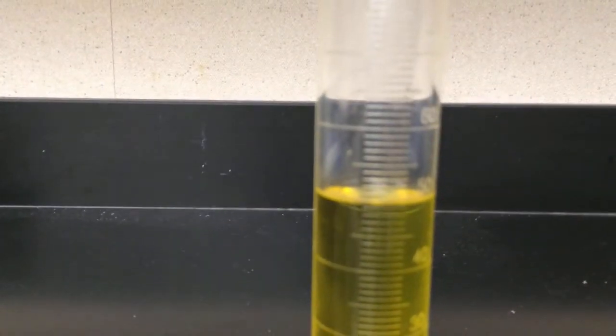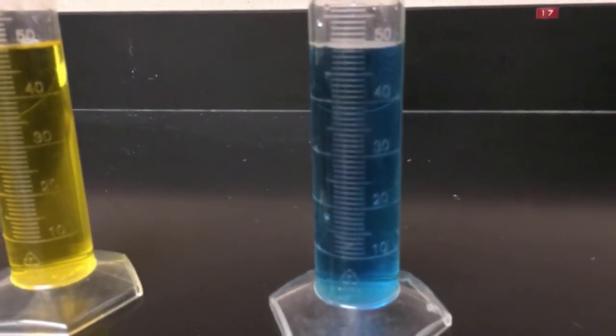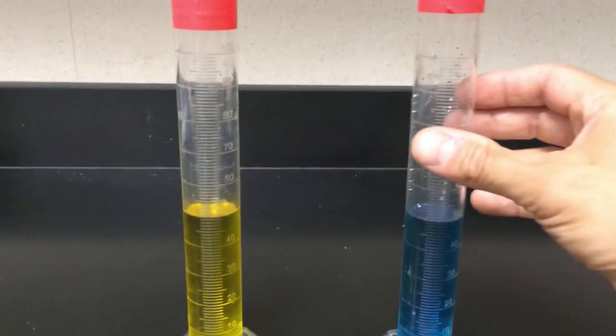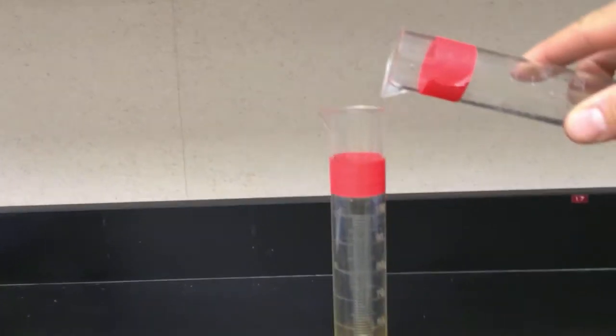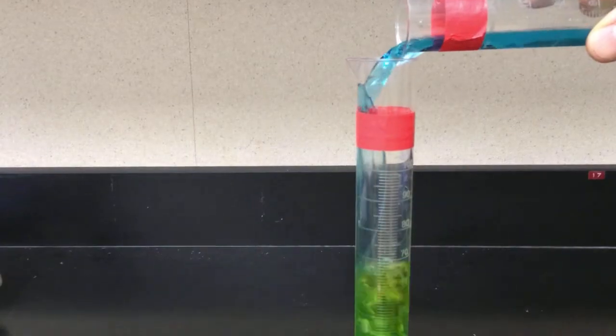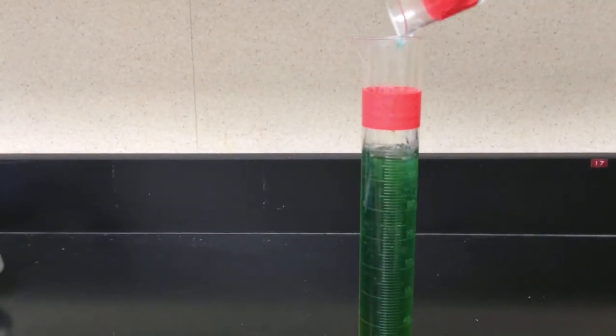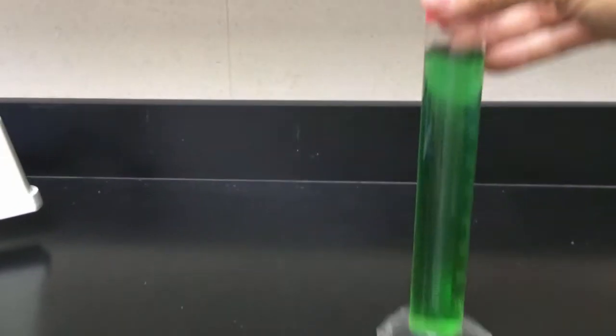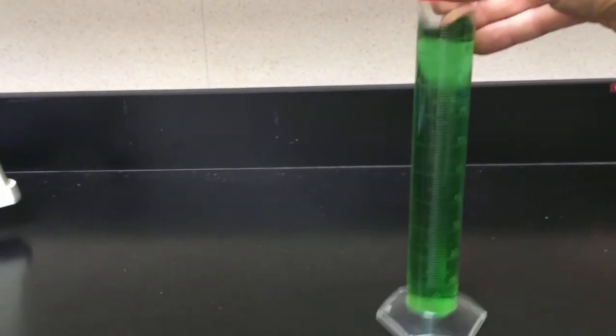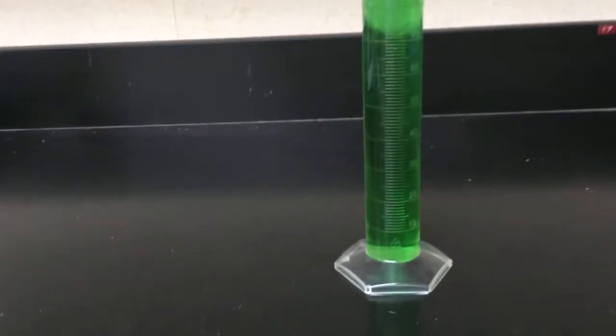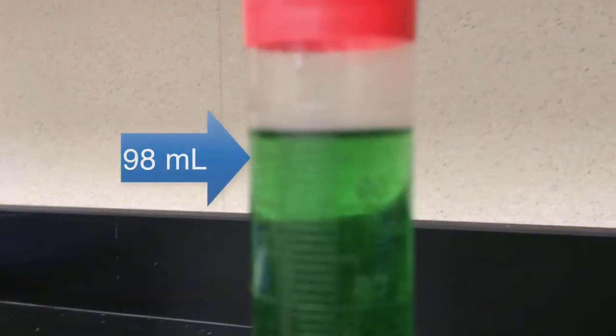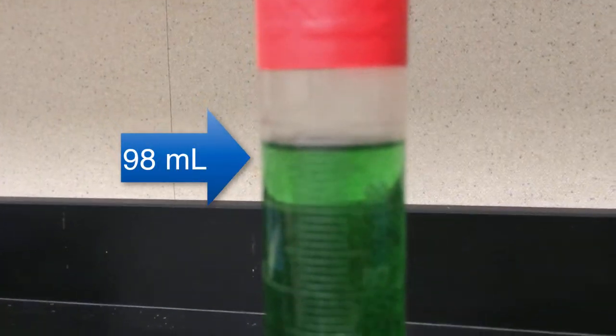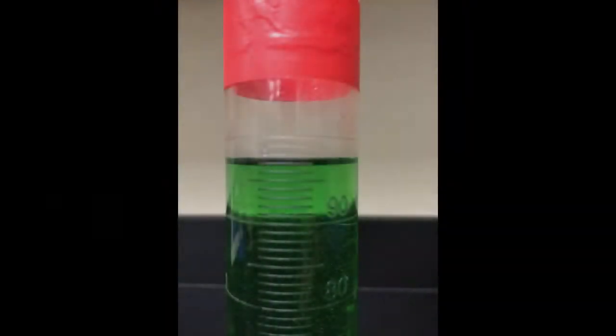So we take the two liquids, 50 milliliters of alcohol, 50 milliliters of water. Remember, the mass of the water is more. And we pour the water into the alcohol. The two liquids mix and create a green liquid. And 50 milliliters plus 50 milliliters should equal 100 milliliters. But when we mixed them, it actually equaled 98 milliliters. So there was two milliliters missing.